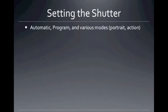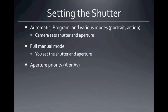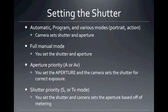Setting the shutter. Cameras — most cameras are set on automatic or program, which lets you do things like turn off the flash and various other modes like portrait or action. They do all of the setting for you; the camera sets the shutter and the aperture. If you're on full manual mode, you set both the shutter and the aperture. If what you care about is controlling your depth of field only, you might use aperture priority — that's either A or AV on a camera — where you set the aperture and the camera sets the shutter for correct exposure. If you take shutter priority, S or TV mode, you set the shutter and the camera sets the aperture based off of metering, to get stopped, panning, or blurred action.